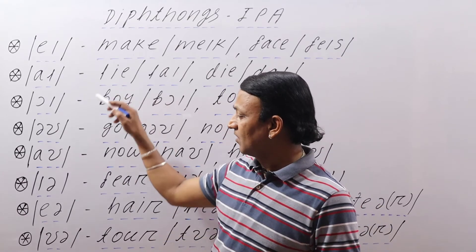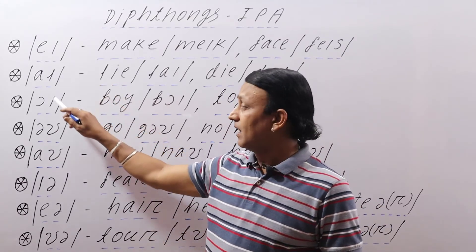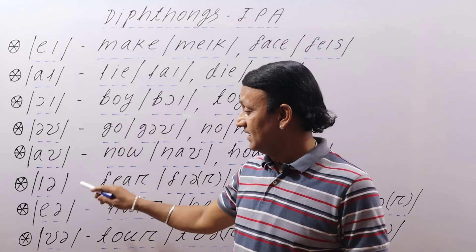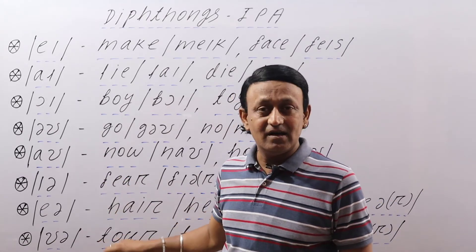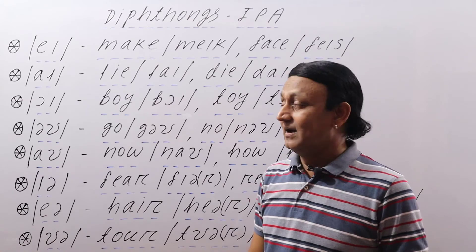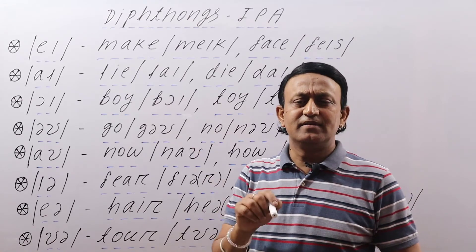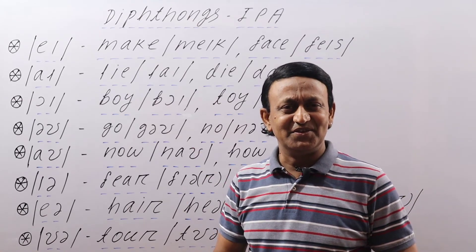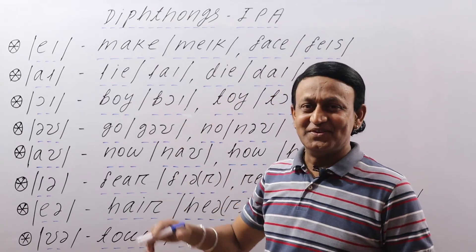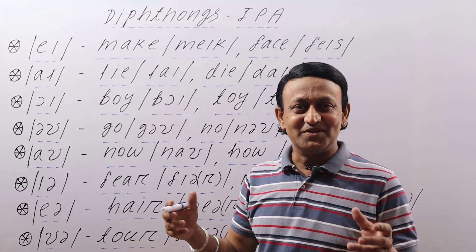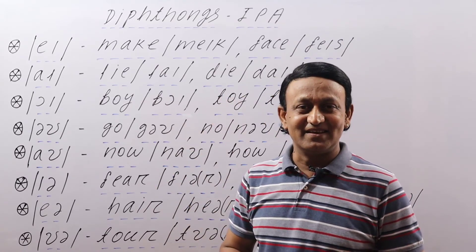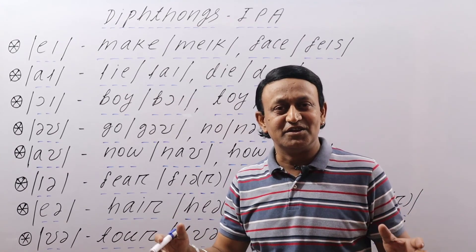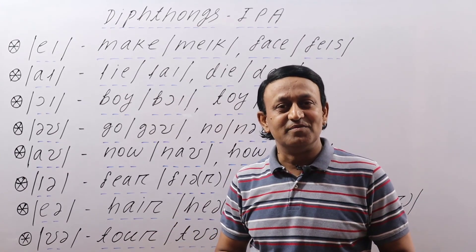So these are all the diphthongs: /eɪ/, /aɪ/, /ɔɪ/, /əʊ/, /aʊ/, /ɪə/, /eə/, and /ʊə/. I hope you enjoyed the class. Please hit the subscribe, share, and like buttons if you like the class and really want to learn these symbols and sounds. Thank you very much. I'll see you in the next class and we'll learn something new. Thank you. Bye-bye.